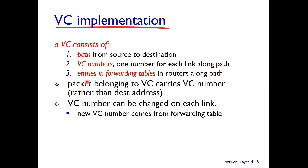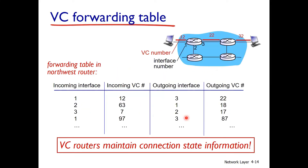Each packet belonging to a VC carries a VC number rather than a destination address. So the destination address is replaced by a VC number. This VC number can be changed on each link, and the new VC number comes from the forwarding table.